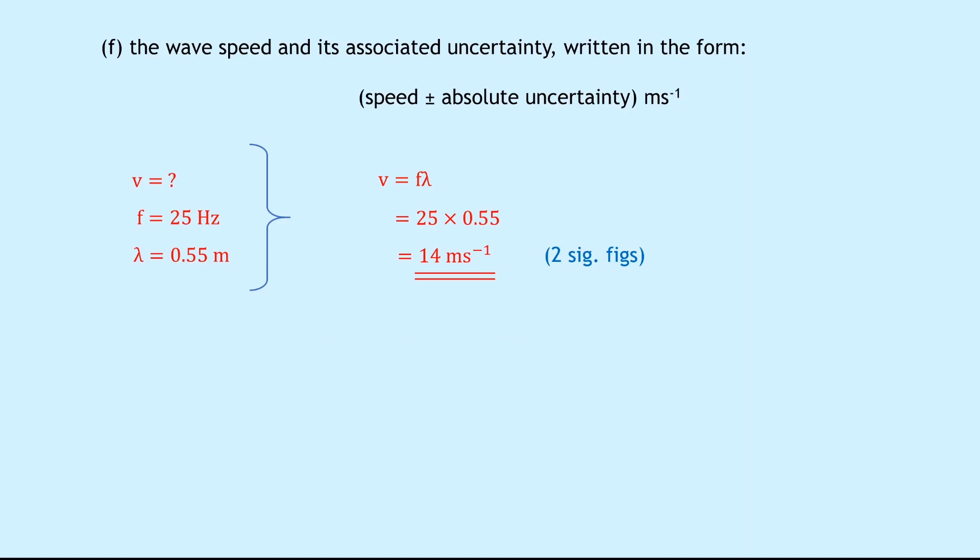Now let's get the uncertainty in our speed. Well, to do that, we need to choose the largest percentage uncertainty from our quantities, the frequency and the wavelength. So the uncertainty in speed is equal to the largest percentage uncertainty, which was the plus or minus 1.32%. Then converting back into the absolute uncertainty, we have 1.32% of 14 equals 0.0132 times 14, which gives us plus or minus 0.18 meters per second. And finally, writing this in absolute form, we have v equals 14 plus or minus 0.18 meters per second, again to two significant figures.